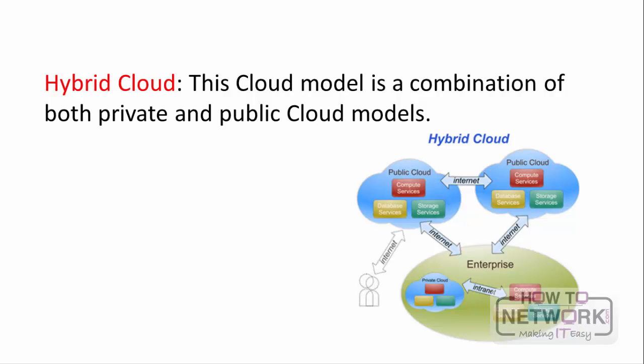For example, an organization might use a public cloud service, such as Amazon Simple Storage Service (Amazon S3), for archived data, but continue to maintain in-house storage for operational customer data. The hybrid approach allows a business to take advantage of the scalability and cost-effectiveness that a public cloud computing environment offers without exposing mission-critical applications and data to third-party vulnerabilities. This type of hybrid cloud is also referred to as hybrid IT.